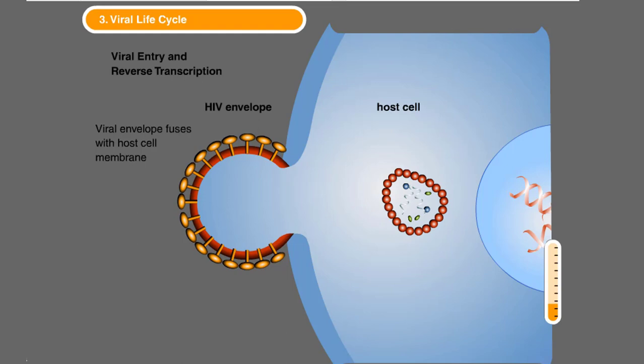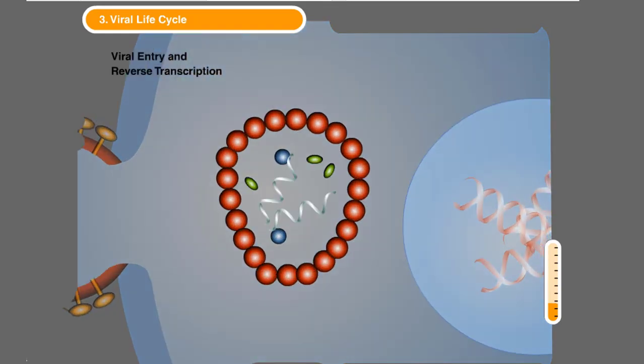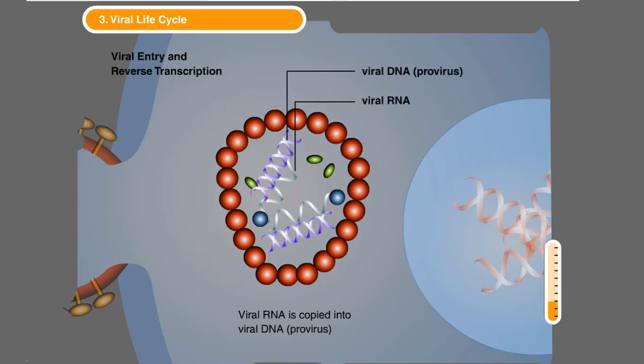The enzyme reverse transcriptase copies the viral RNA into double-stranded DNA, which is now the same form as the genetic material of the host cell.